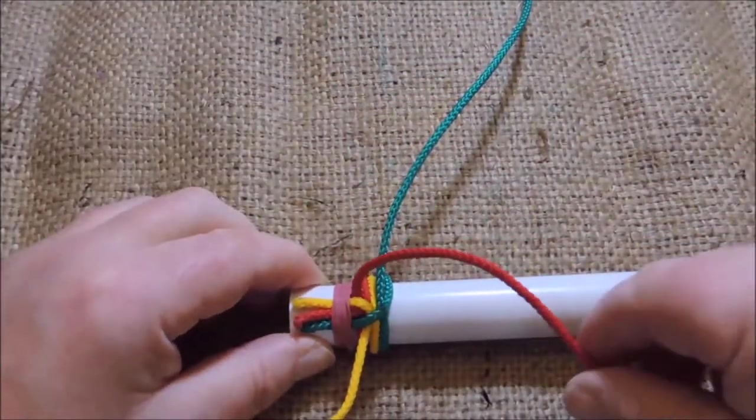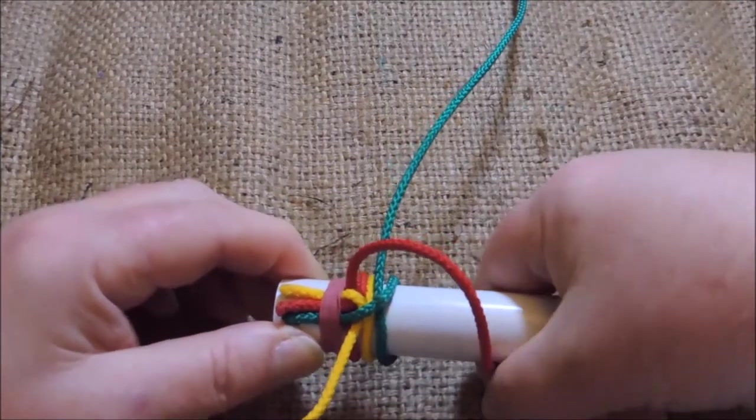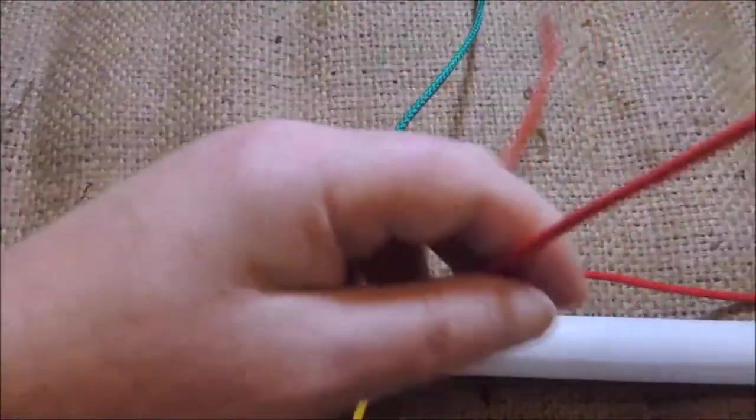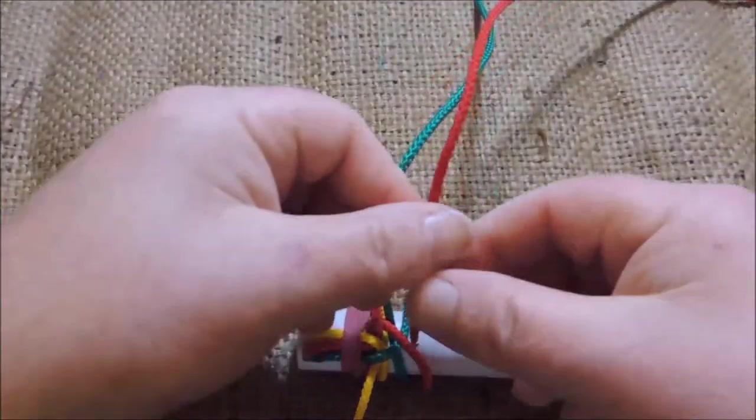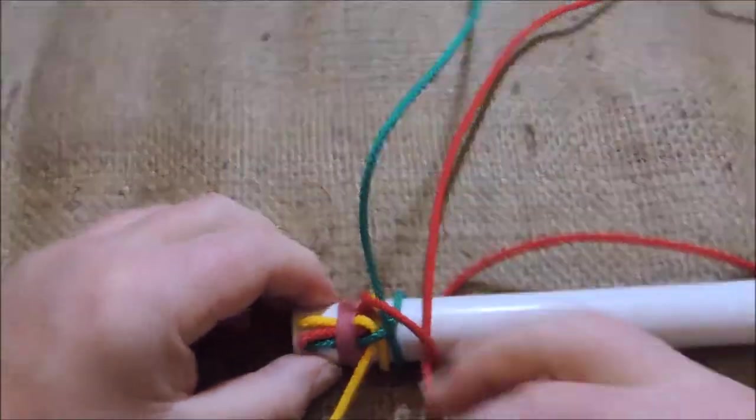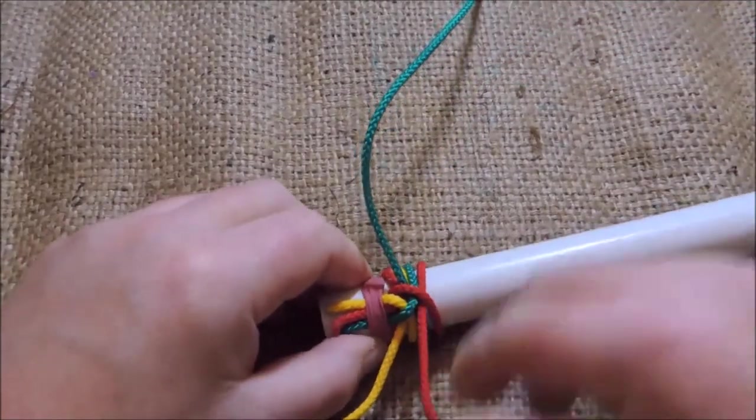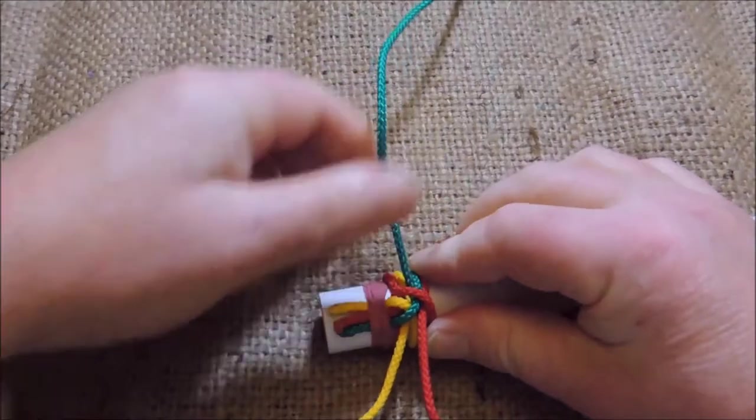like that, underneath the back of the pipe, and then pass it through to tighten it off. OK, like so. So, and then just go back, and tighten them all up.